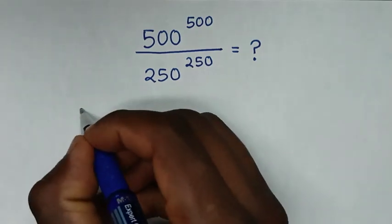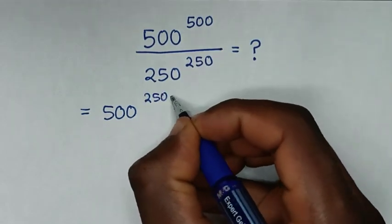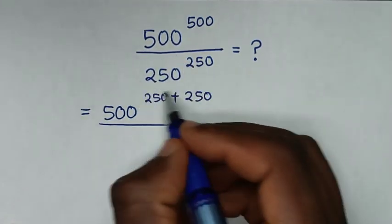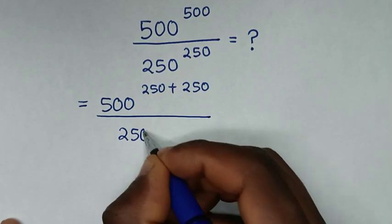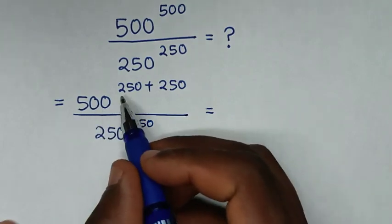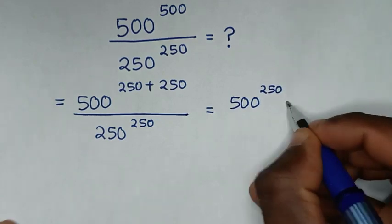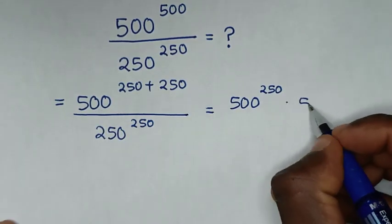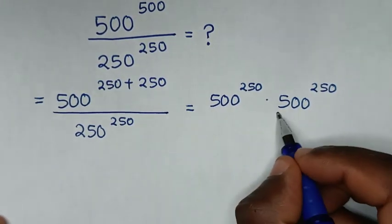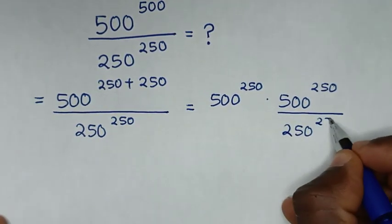So, it will be equal to 500 power of 500, which is the same as 250 plus 250, over the denominator 250 power of 250. Then it will be equal to 500 power of 250 times 500 power of 250. Then we divide it by one of them, which is 250 power of 250.